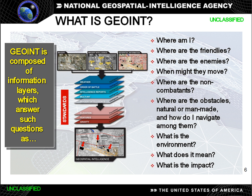In the United States, geospatial intelligence is intelligence about the human activity on Earth derived from the exploitation and analysis of imagery and geospatial information that describes, assesses, and visually depicts physical features and geographically referenced activities on the Earth.